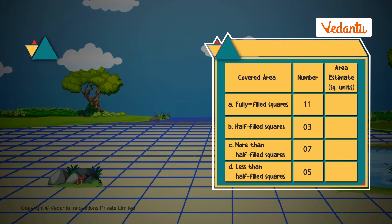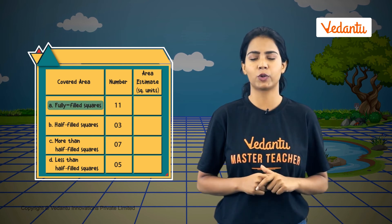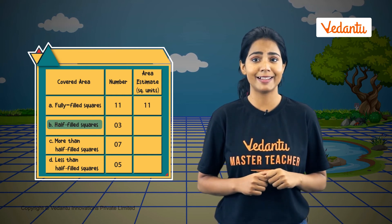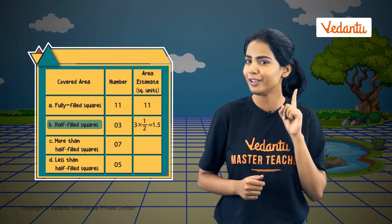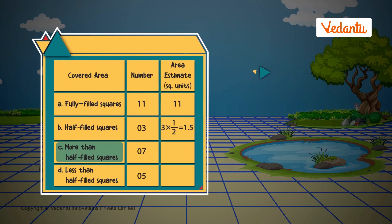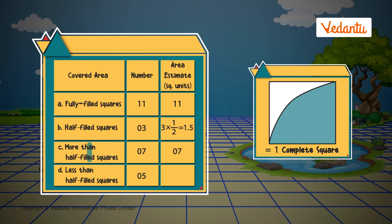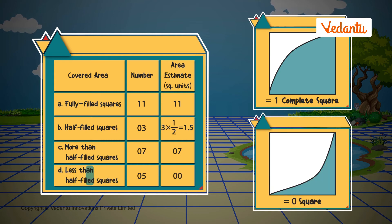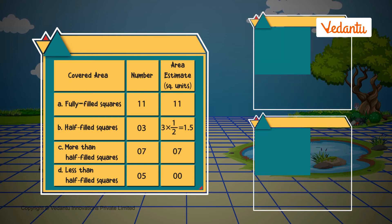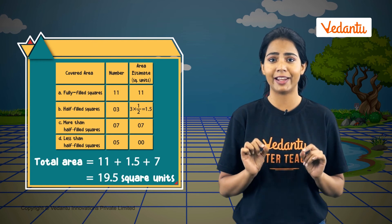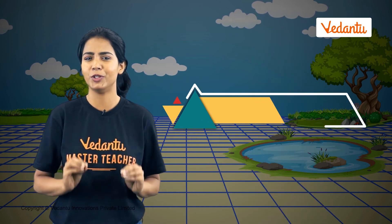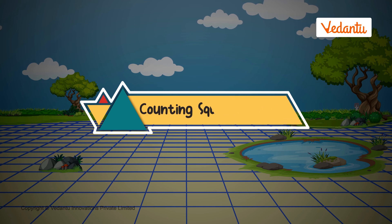Let's put together our observations. We have 11 fully filled squares, so their area will be 11. For half filled squares, we multiply the number by half, giving us three divided by two, which is 1.5. For squares that are more than half filled, we count them as one square each. For ones that are less than half filled, we count them as zero. This roughly balances out the areas covered by the lake in these two types of squares, giving us a total area of the pond as 19 and a half squares. All areas have the same unit based on the unit of length taken. The method we learned is called the counting square method.